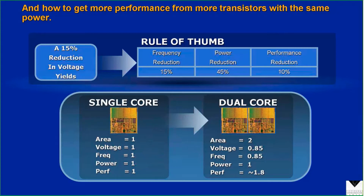Here's the math, an orders-of-magnitude calculation: if we have a single core running at whatever voltage — probably five volts — at a gigahertz, taking 100 watts to run, and we get however many flops of performance. What if we instead had two cores, but in order not to have double the heat dissipation, we reduce the voltage by a little bit — 15 percent — and reduce the clock rate by a little bit?